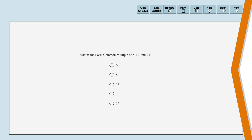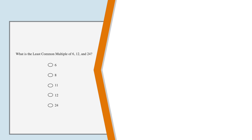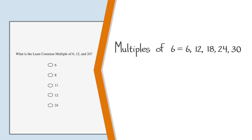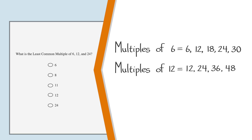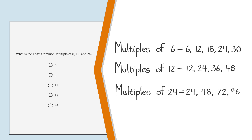Let's start with 6. The first multiples of 6 are 6, 12, 18, 24, and 30. The first multiples of 12 are 12, 24, 36, and 48. 24 has multiples of 24, 48, 72, and 96. We see 24 in each of these lists and that it's the smallest number that each of these lists share. So 24 is the least common multiple of 6, 12, and 24. The correct answer is 24.